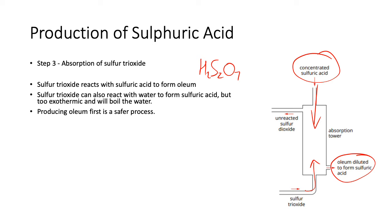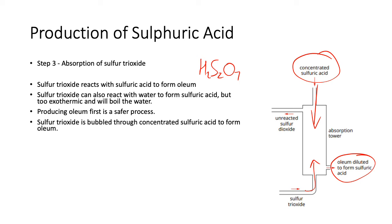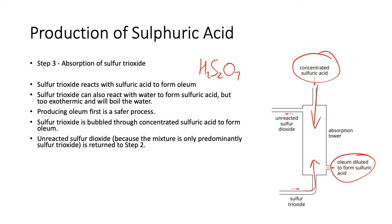Because only the sulfur trioxide reacts with the sulfuric acid and sulfur dioxide does not, the sulfur dioxide stays in gaseous form and the sulfur trioxide gets absorbed into the liquid. So the sulfur dioxide, being a gas, can be collected at the top and put back into the last reaction chamber. Sulfur trioxide bubbles through, forms oleum, and unreacted sulfur dioxide is returned to step two.